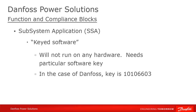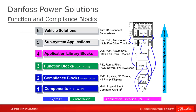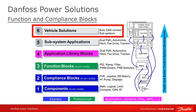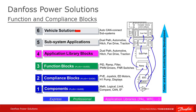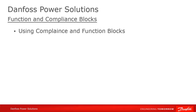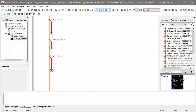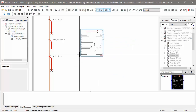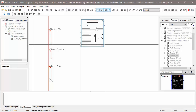You will also require a professional license to compile subsystem applications, as they contain function blocks. The last rung on the ladder represents total vehicle solutions comprising one or many controllers and displays and the communications amongst them. This would be for you as an OEM manufacturer to complete, although Danfoss or a Danfoss distributor can be contracted to provide consulting assistance. Using the blocks — both function and compliance blocks — is designed to be fast and easy. Start by dragging in the block from either the Function tab for function blocks or the Hardware tab for compliance blocks.